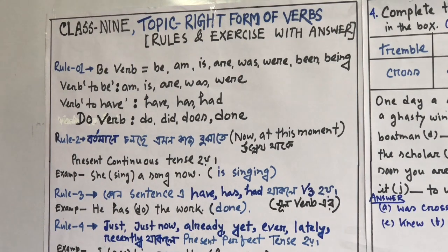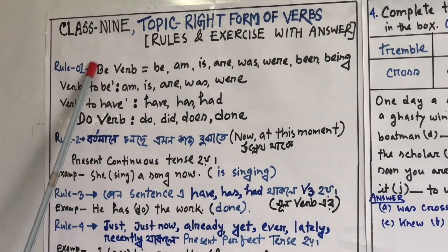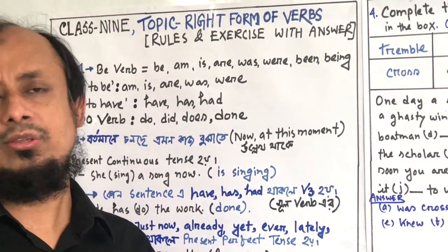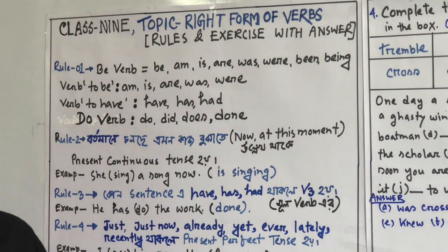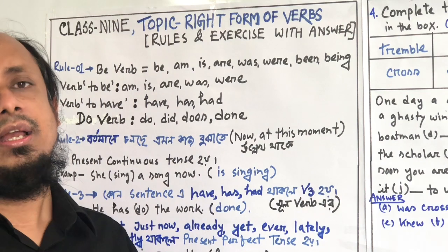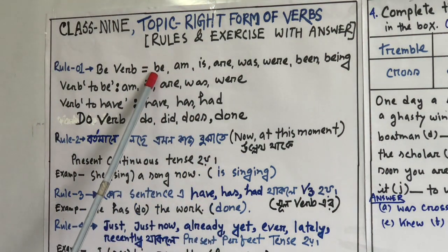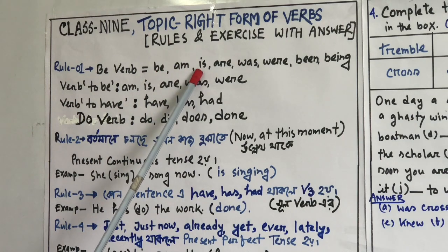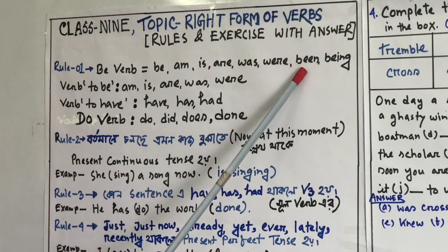Let's take a look at Rule 1. B-verb — B-verb is one type of auxiliary verb. According to its usage, the B-verbs are: am, is, are, was, were, been, being.